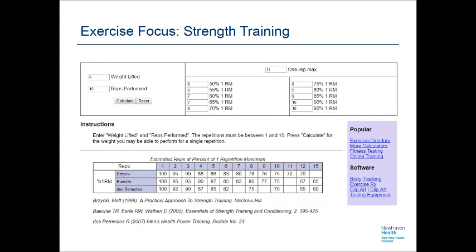Using the exrx.net website, input the weight lifted and the repetitions performed. With this website, the preference is to test and retest until you determine a weight in which the patient is able to perform no more than 10 repetitions. In this example, the client lifted 8 pounds for 10 repetitions before fatigue or inability to complete the activity smoothly. This calculates to an 11-pound 1 rep max. Now that we have this information about a particular movement, we can use it to prescribe the training program.